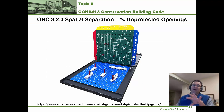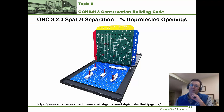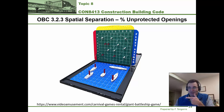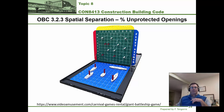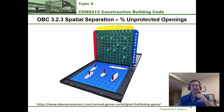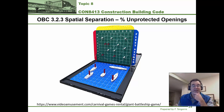Using this table is similar to how you play Battleship. You find the coordinate along the top for limiting distance and the coordinate along the side for area and ratio, and wherever the two meet, that gives you the maximum percentage of unprotected area.